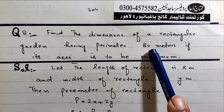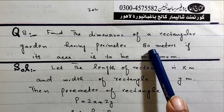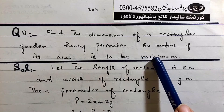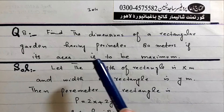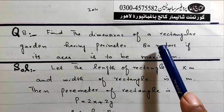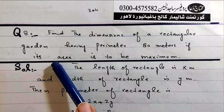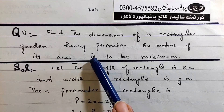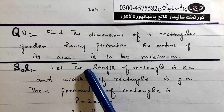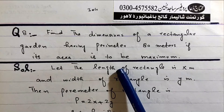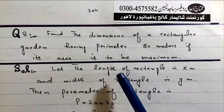Find the dimensions of a rectangular garden having perimeter 80 meters, if its area is to be maximum.